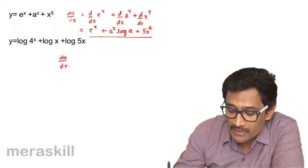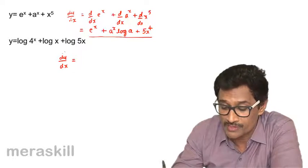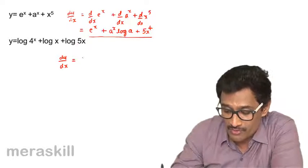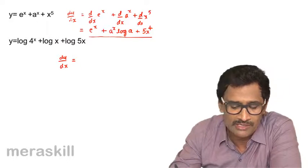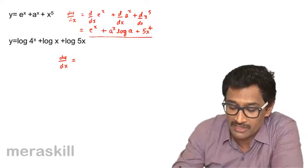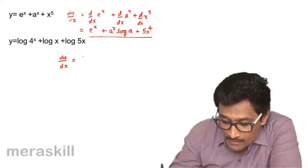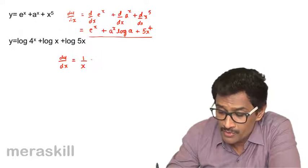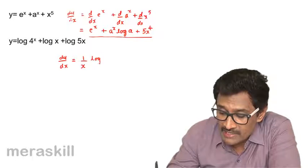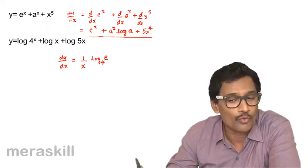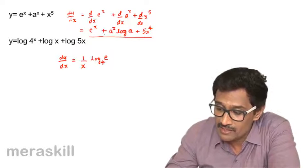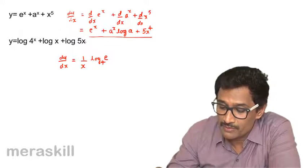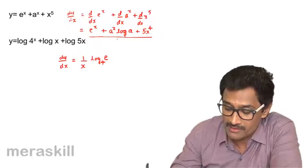Very interesting examples — both of these sum up all the rules. So, log 4 raised to x: this is of the form log a raised to x. Now, the derivative is going to be 1 by x into log e to the base 4. In this case, we use log a to the base e. In the next one, we shall be doing that same thing, so it is going to be log e to the base 4.